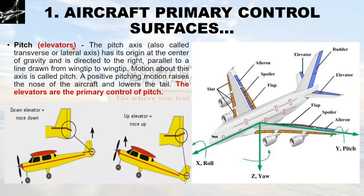Pitch is governed by elevators. The pitch axis, also called the transverse or lateral axis, has its origin at the center of gravity and is directed to the right, parallel to a line drawn from wingtip to wingtip. A positive pitching motion raises the nose of the aircraft and lowers the tail. The elevators are the primary control of pitch. When the elevators go down, higher air pressure pushes them up, causing the nose to go down. When the elevators move up, higher pressure from above on the elevator causes the nose to rise.